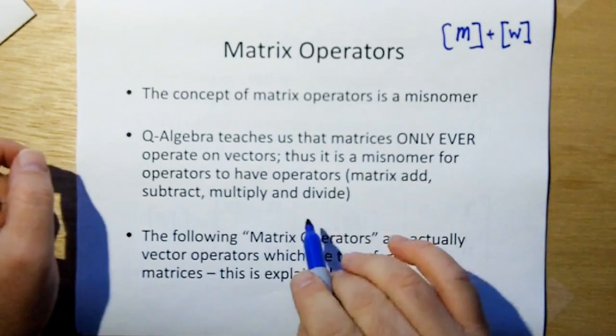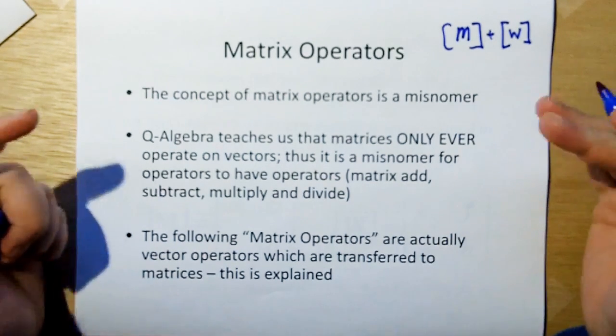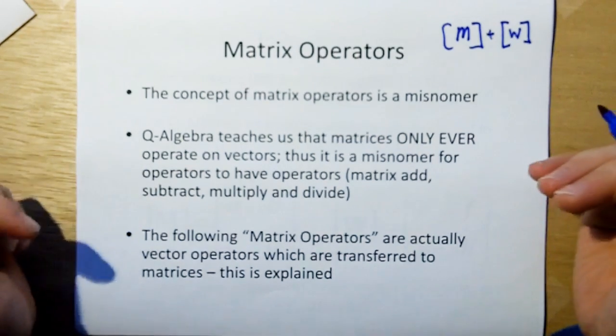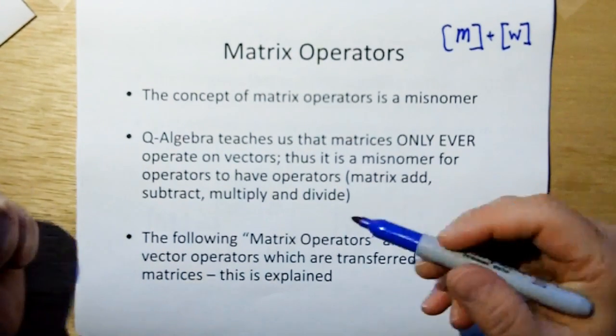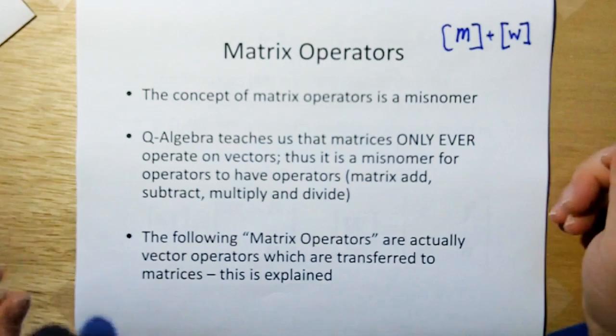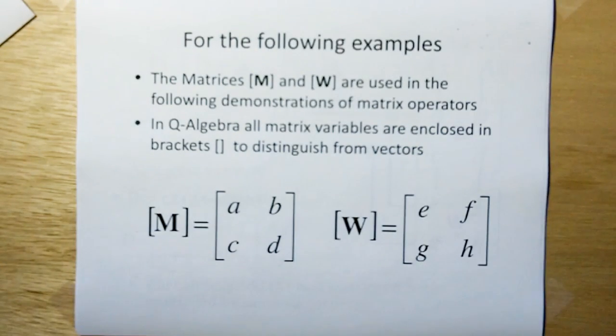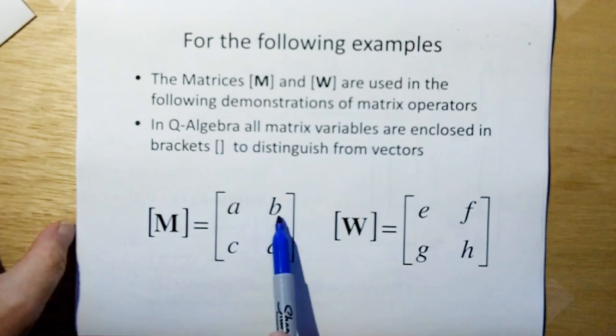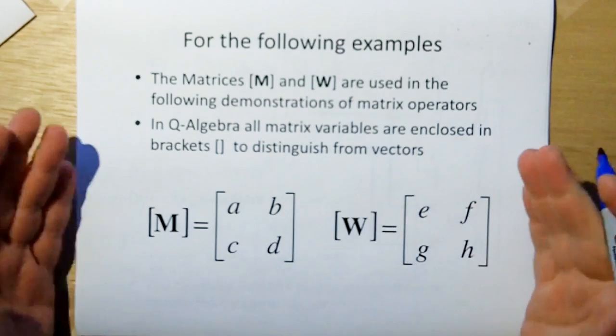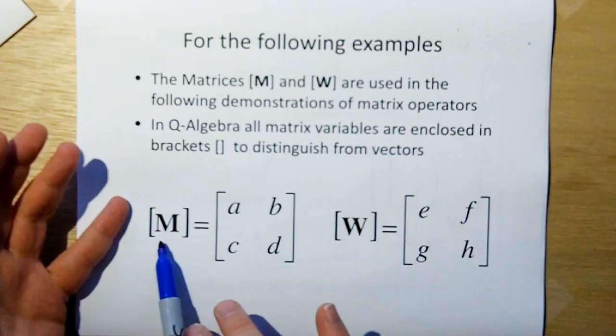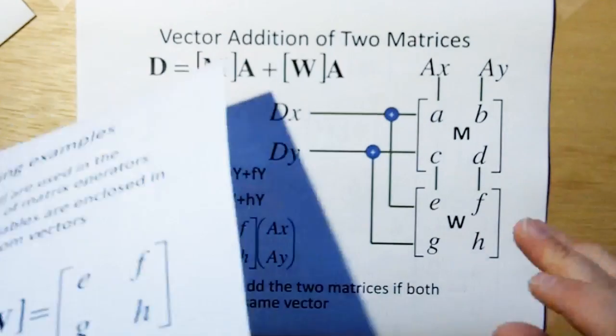Q algebra teaches us that matrices only ever operate on vectors. Thus, it's a misnomer for operators to have operators, like matrix add, subtract, multiply, and divide. But it doesn't matter because the following matrix operators that we're going to show you are actually vector operators which are transferred to matrices. For the following examples, we're going to use two dimensional matrices to keep this easy, and we're just going to put letters instead of numbers in so we can show the algebra. Q algebra and matrix variables are enclosed in brackets just to distinguish them from vectors.